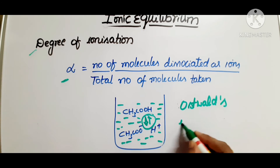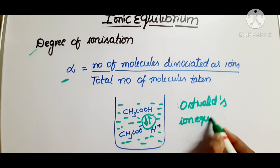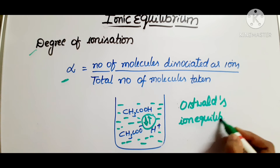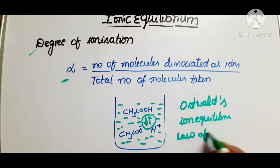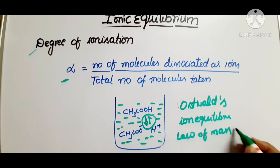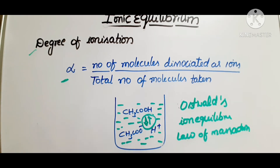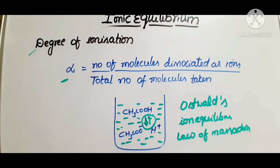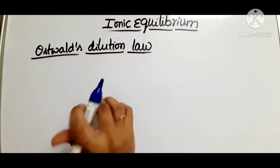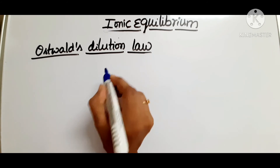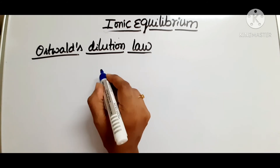Oswald, a scientist, proposed the Oswald Dilution Law by applying the law of mass action to ionic equilibrium. The degree of dissociation of a weak electrolyte increases with dilution. Now, suppose we consider a binary electrolyte AB.